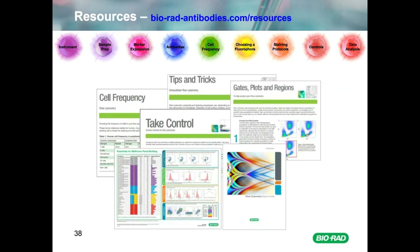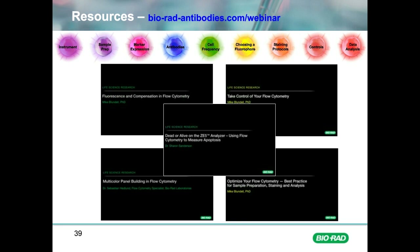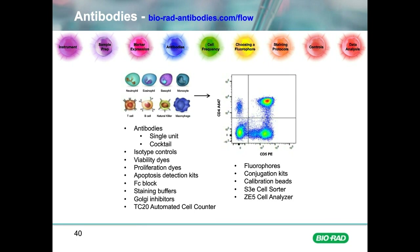In addition to the Panel Builder, we also have a lot of other resources for flow cytometry and other applications using antibodies — go to bioradantibodies.com/resources to find out more. We also have five other flow cytometry webinars available to watch on demand, covering topics such as controls, fluorophores, multi-colour panel building, and apoptosis. We have antibodies, controls, proliferation reagents, flow supporting buffers, and much more to help you with all your flow cytometry experiments. Go to bioradantibodies.com/flow to look at our complete range.